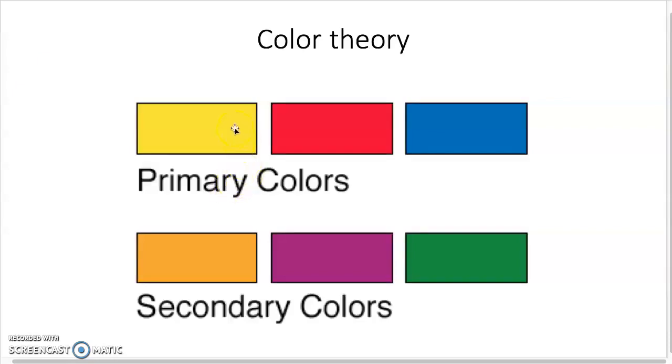And then a bit more theory. Primary colors: yellow, red, blue. They're primary because they can't be mixed. The secondary colors are mixing two primaries to create one secondary color. So orange, as you know, is yellow and red. Purple is blue and red. And green is yellow and blue. So they're made by mixing two primaries.